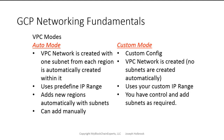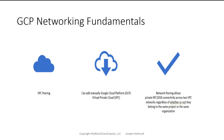VPC peering allows us to have connectivity between two VPCs. For example, if we want to connect one company to another company, we can do that — they don't even have to be part of the same company or organization. This gives us some benefits, especially like in an organization that might have bought another company and wants to bring them together, peering one organization with another.